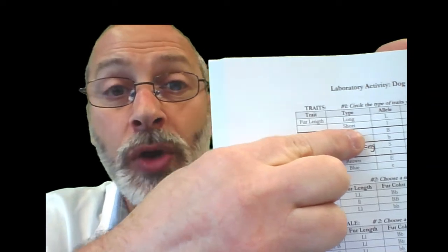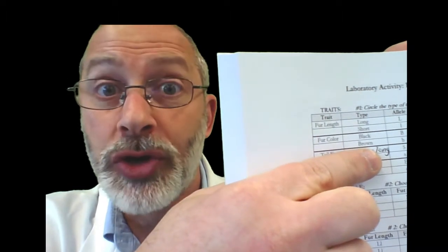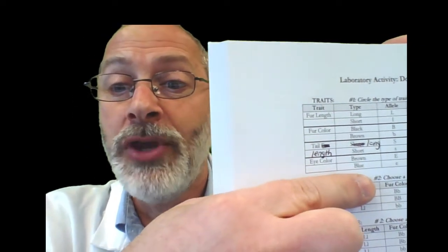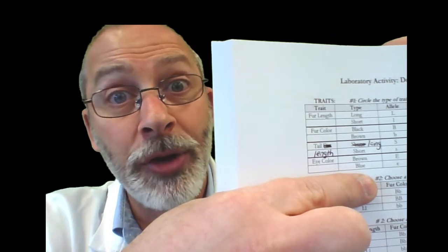For your fur length, do you want long or short? Circle one of those words. For your fur color, do you want black or brown? Circle one. For your tail length, do you want long or short? Circle one. For your eye color, do you want brown or blue? Circle one. So that's what you do for step one.